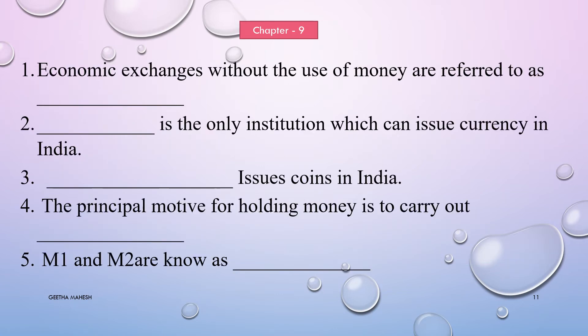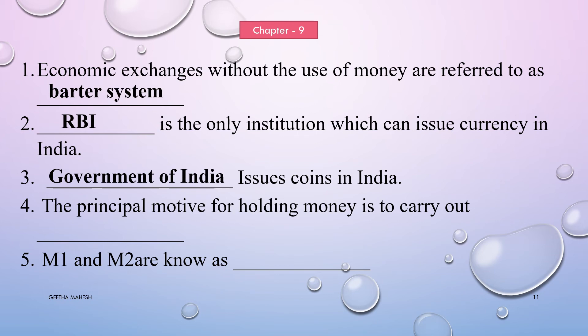A few important fill in the blanks from chapter 9, money and banking. Economic exchanges without the use of money are referred to as the barter system. RBI is the only institution which can issue currency in India. The central government issues coins in India. The principal motive for holding money is the transaction motive. M1 and M2 are known as narrow money.